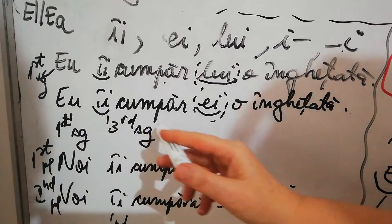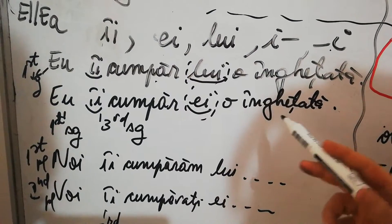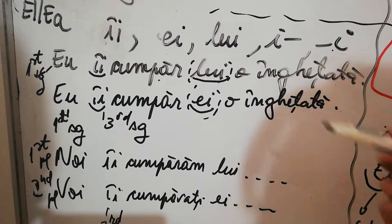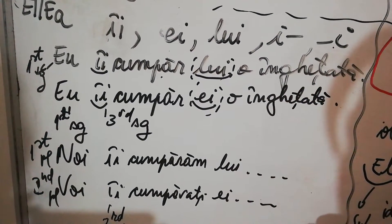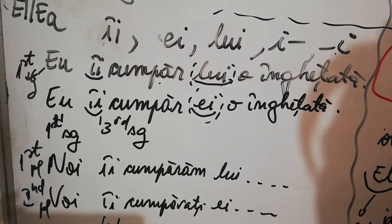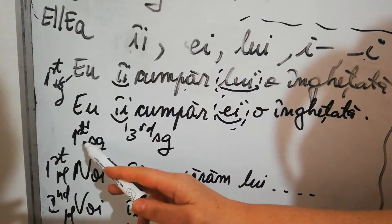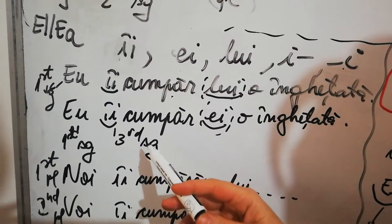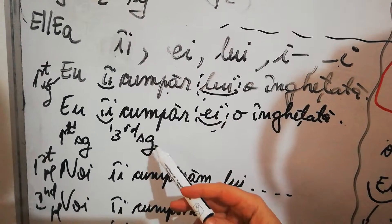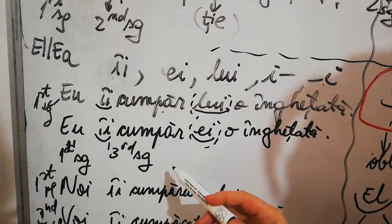'Eu îi cumpăr ei o înghețată' - I buy her an ice cream. The subject is first person singular, I. The indirect object is him or her. They are not identical, so the pronoun here is personal in dative.